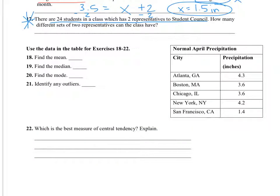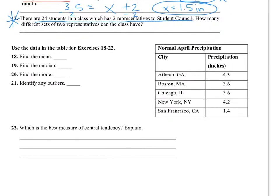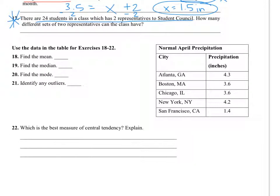Okay, so we're going to use the table to find the mean, median, mode, and outliers. Mean is the average. Mean is when you're going to add up all of the numbers and divide by how many that there are. So I'm going to add 4.3 plus 3.6 plus 3.6 plus 4.2 plus 1.4. And I'm going to divide it by 5. So the mean is 3.42. It doesn't tell me what I should round to, so I'm going to take it at 3.42.